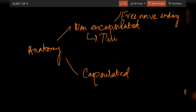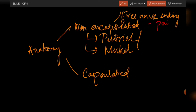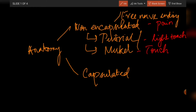Then we have peritricheal receptors — 'trichea' meaning hair — so they are also called root hair plexuses. Then we have tactile discs of Merkel. Free nerve endings usually sense pain. Peritricheal receptors sense light touch; they form a plexus around the root of the hair. Merkel discs sense tactile touch sensation.